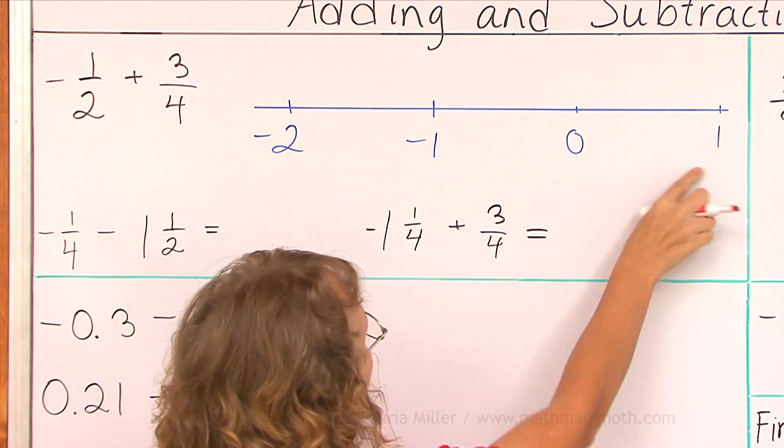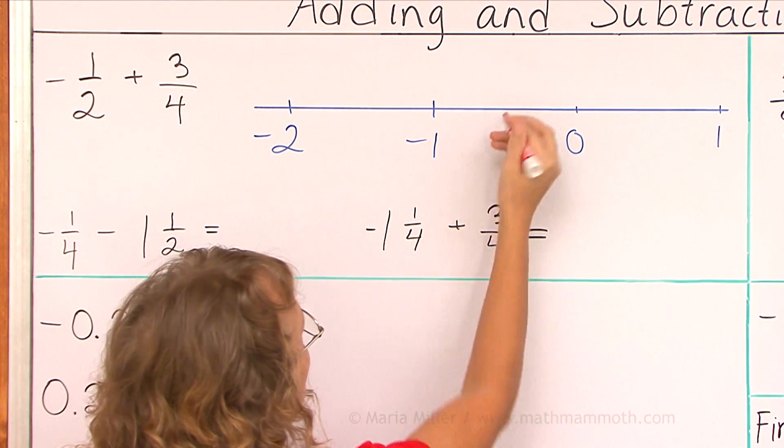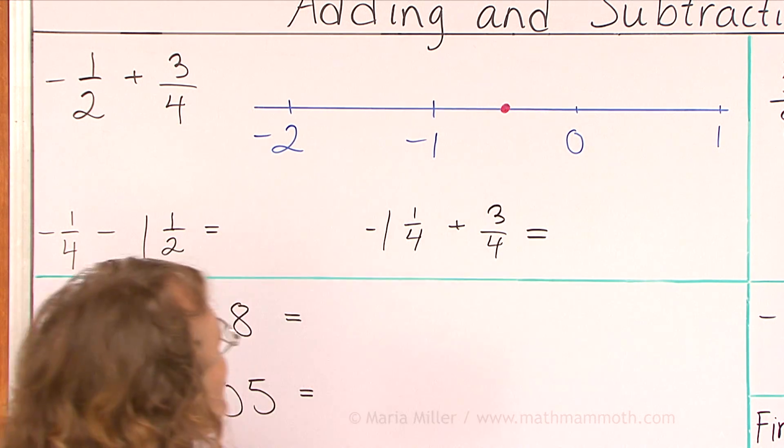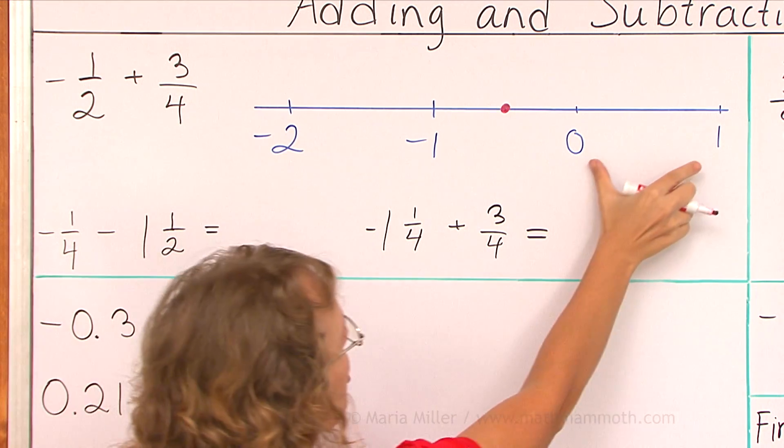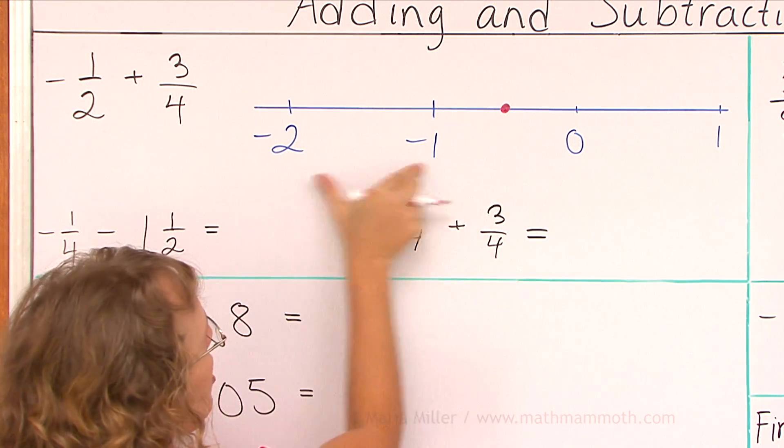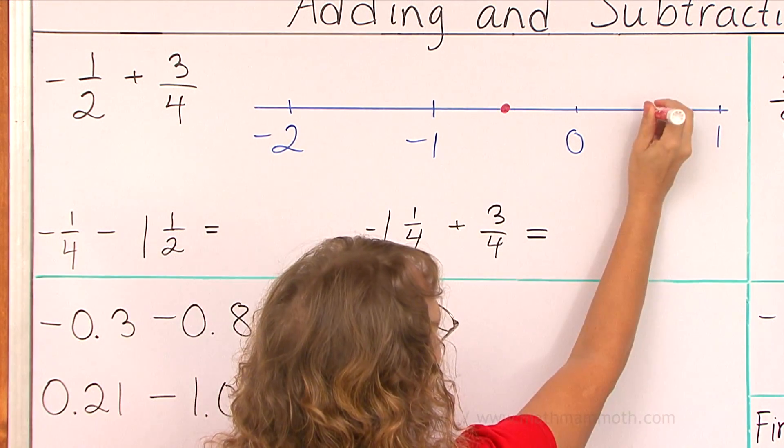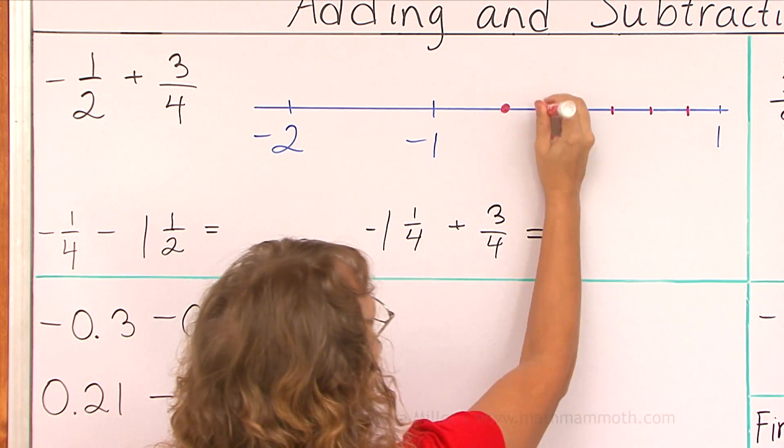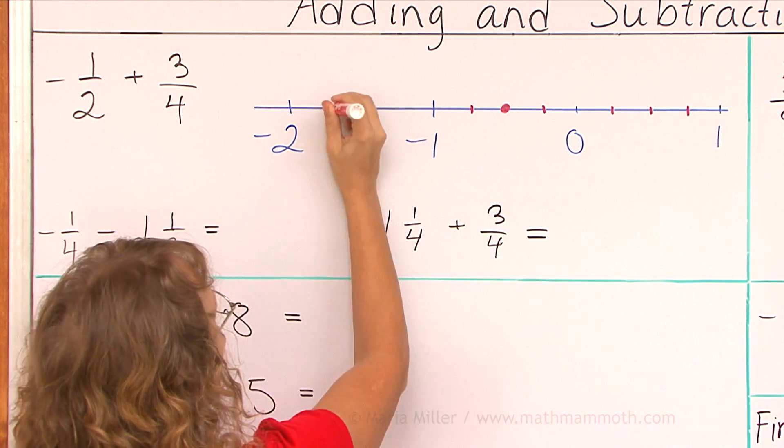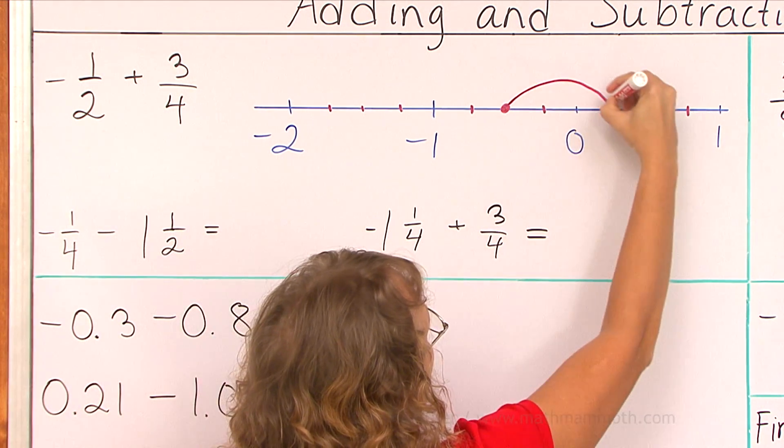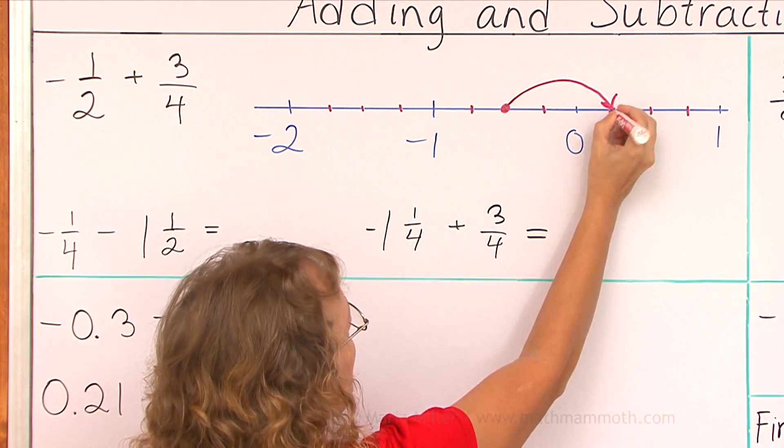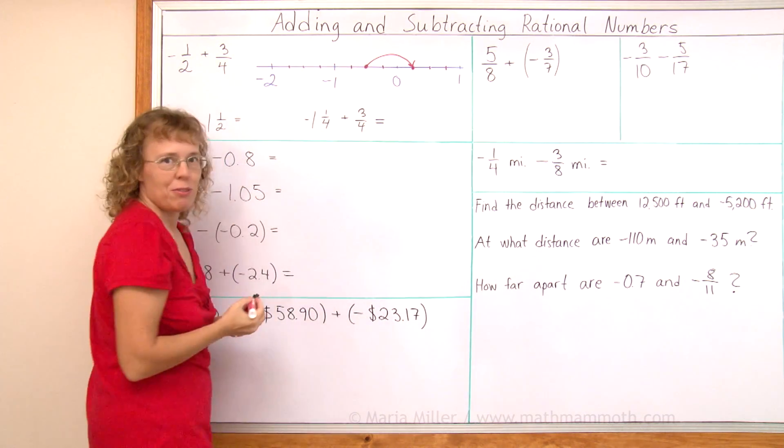Negative one-half, it would be here between these two, right there, and then to jump three-fourths I need to divide each interval here into four parts to get fourths. And now from here a jump of three-fourths, over there. So my answer is one-fourth.